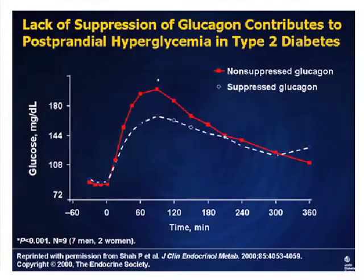Insulin regulates the alpha cell. Insulin and amylin — something else produced by the beta cell — suppress alpha cell function and suppress glucagon. As you don't produce insulin appropriately, you keep producing glucagon inappropriately. The two of them work in concert to allow hepatic glucose output to be increased. In people with diabetes where glucagon is not suppressed, you get far more glucose coming out of the liver than in people where glucagon is suppressed.